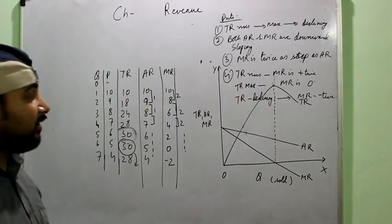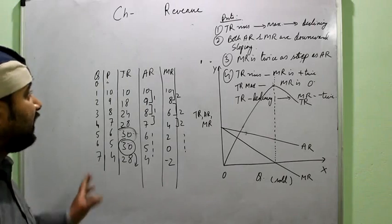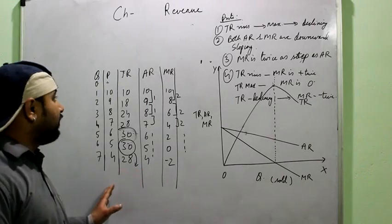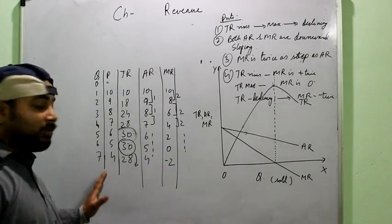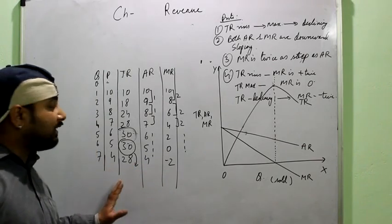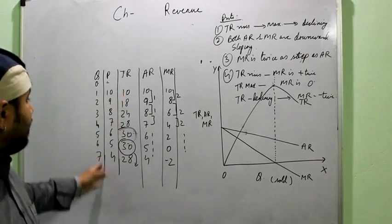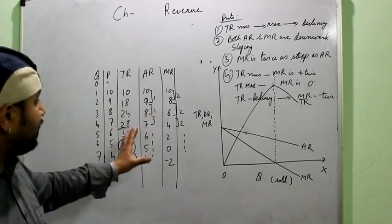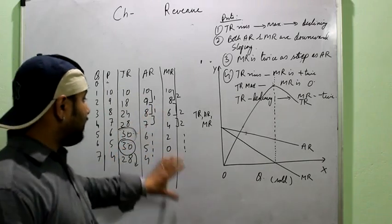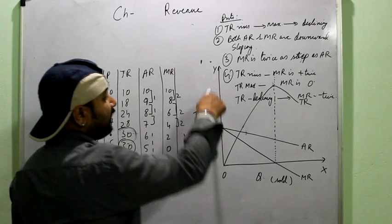So these are the important points that you need to mention when you are explaining the relation between TR, AR and MR in the imperfect market. It may be asked in form of a schedule. Then you can frame a schedule like this. Just you have to decrease the price and multiply and calculate all the TR, AR and MR. You will automatically get the schedule.